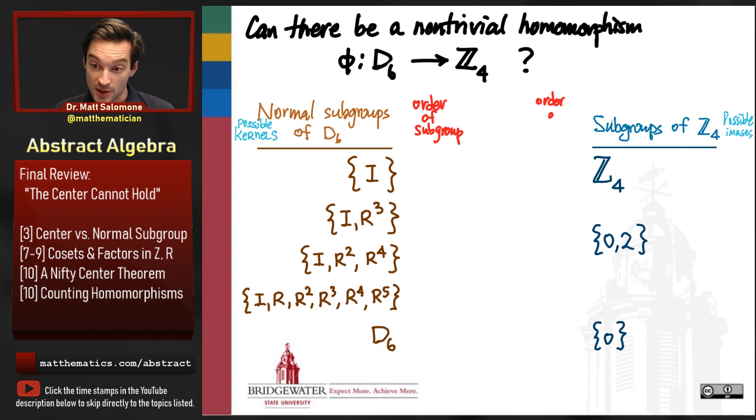So we'll play an order game. The orders of these subgroups are respectively 1, 2, 3, 6, and 12, the normal subgroups of D6, 4, 2, and 1, the subgroups of Z4.